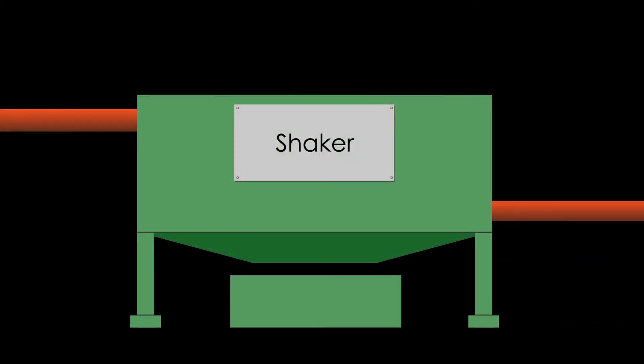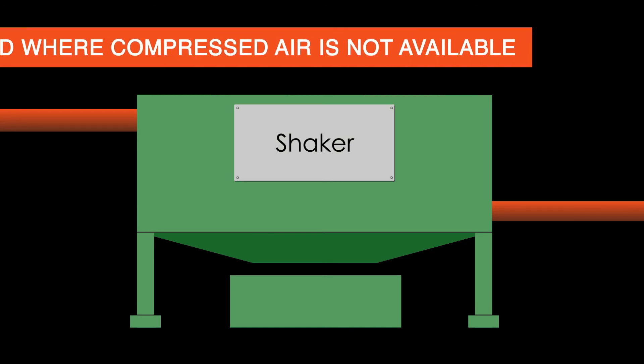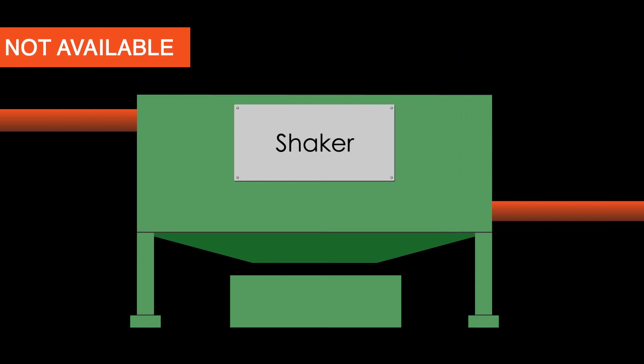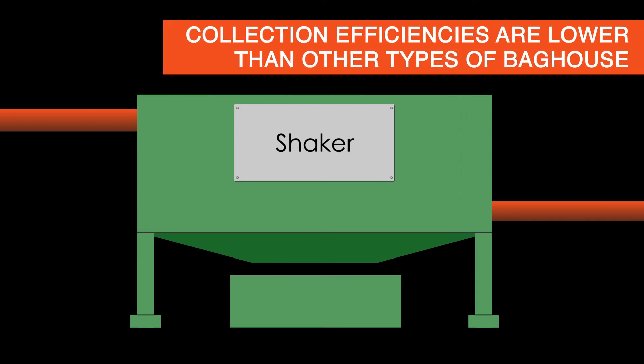Shaker style baghouses are generally uncomplicated and are commonly employed where compressed air is not available. Also, particle collection efficiencies are generally lower than other types of baghouses that use felted or pleated filter media.